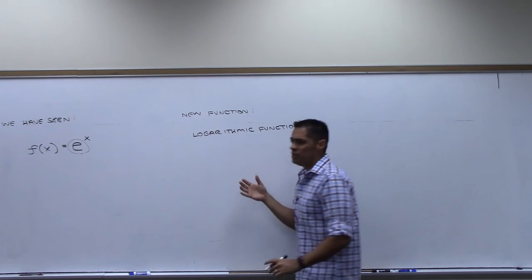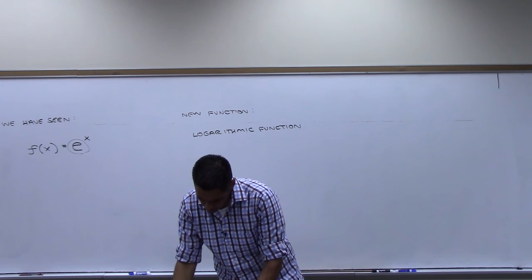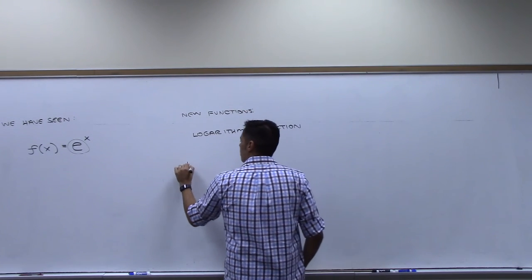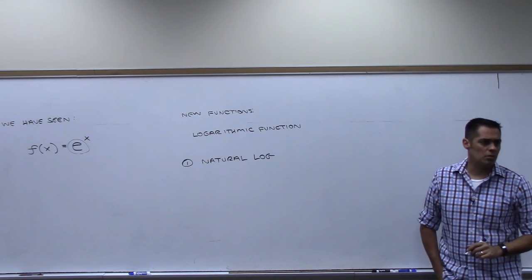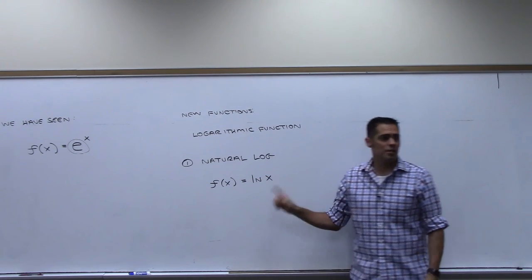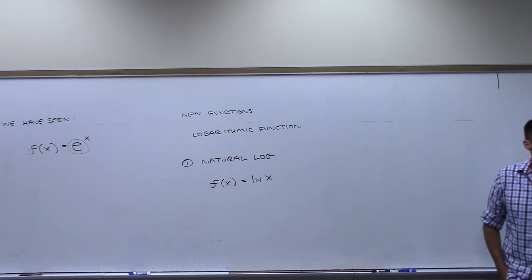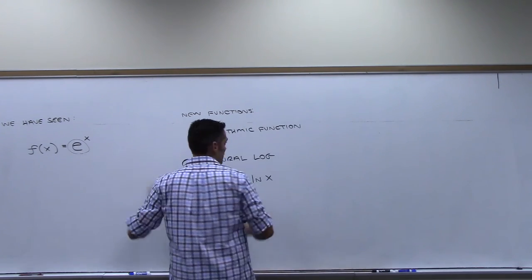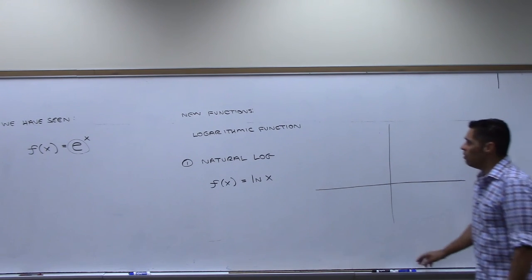With logarithmic functions you can have a bunch of different ones, but we're only going to look at two specific ones. The first one is called the natural log. The function is f of x equals ln x. Now we looked at this last class and used it, but I hadn't really introduced it formally. So what I'd like to do is try and draw this function — we're going to sketch it using our calculator. I'll also make a connection between these two functions.